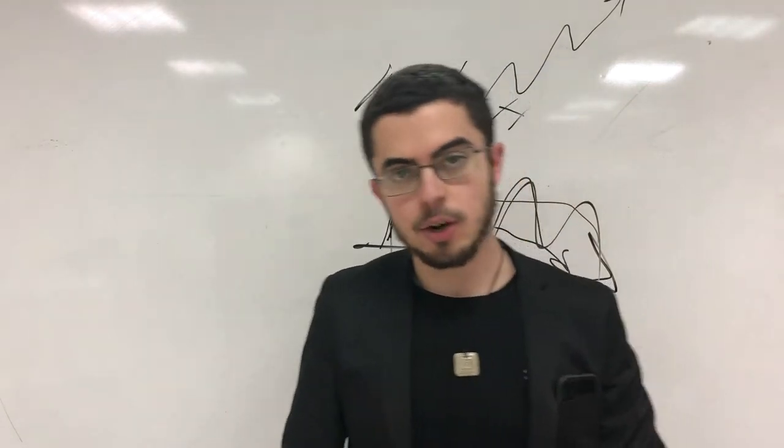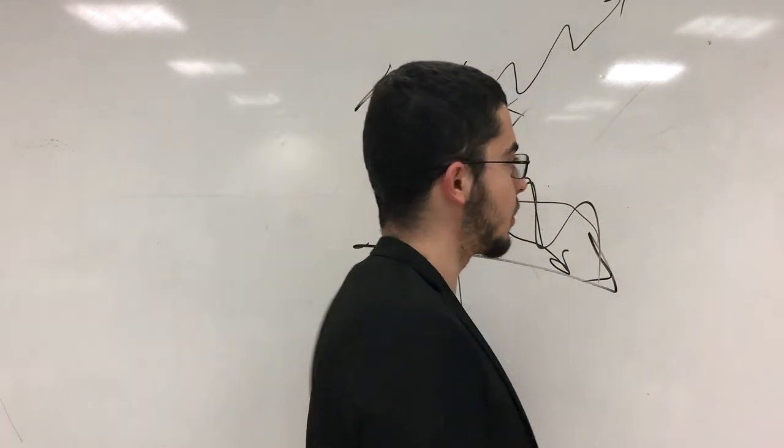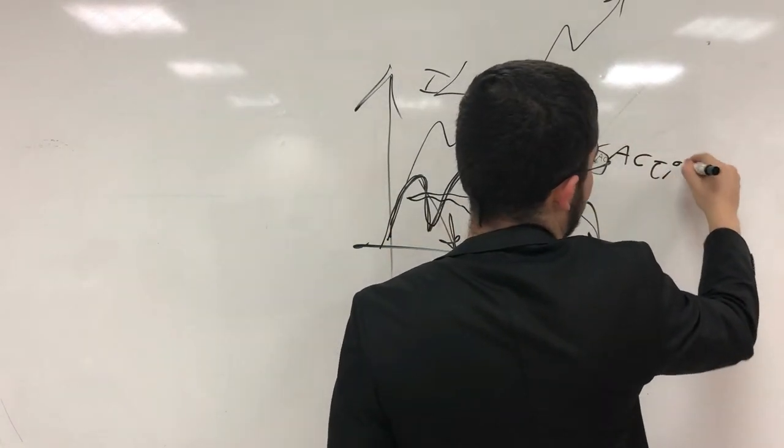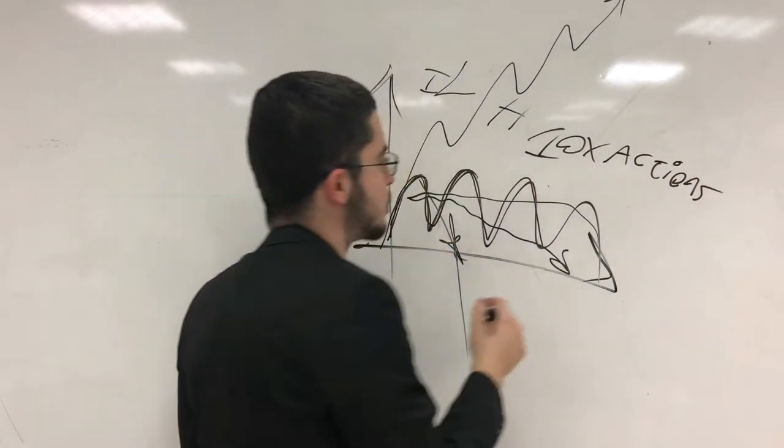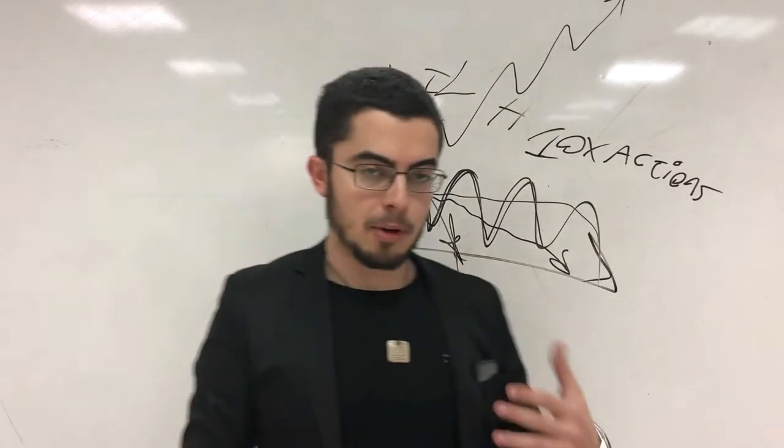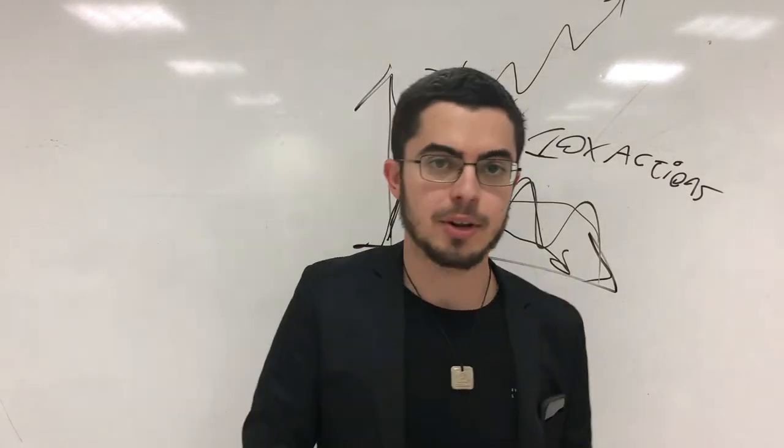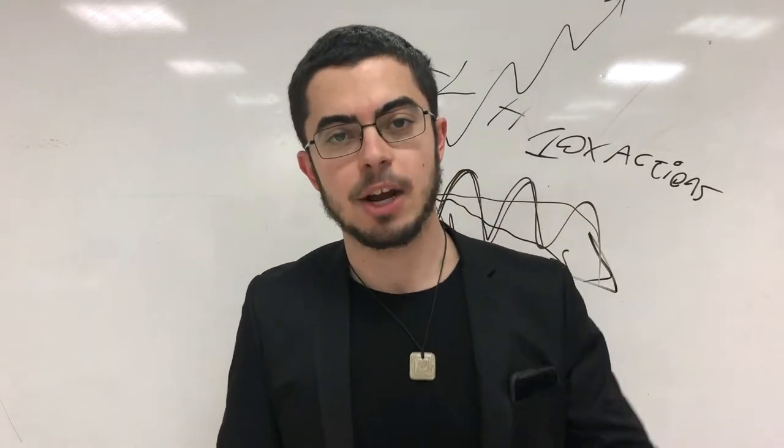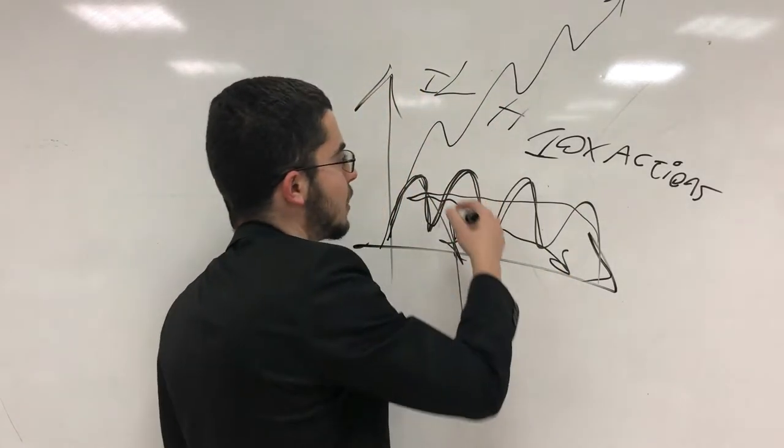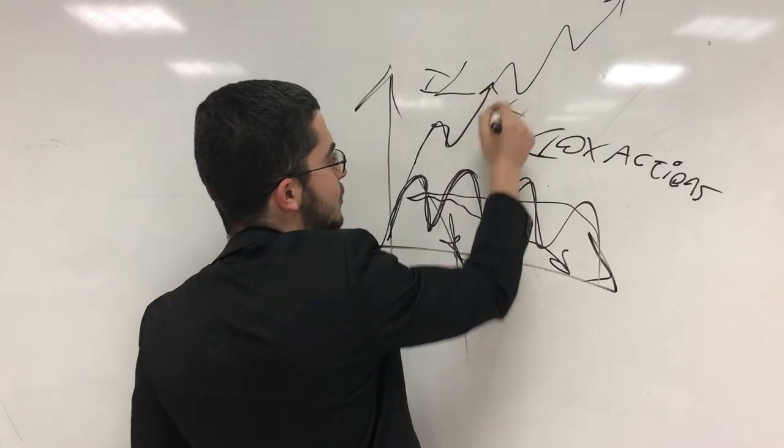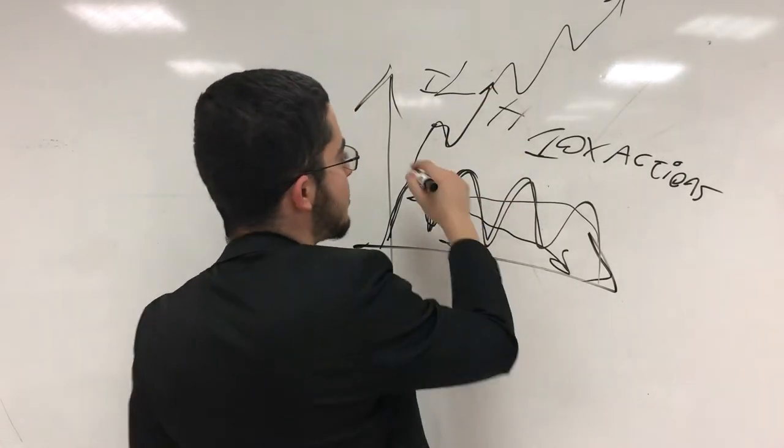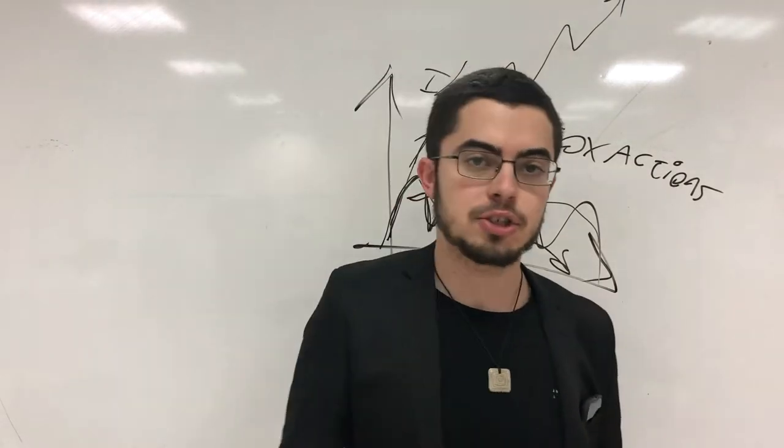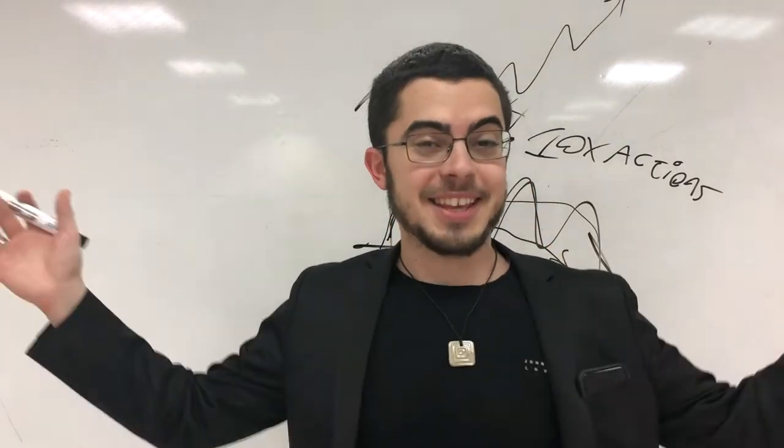So you want to start with the 10x rule. You always want to start with 10x actions. That is the basis for any form of growth. So what that means is start multiplying the amount of actions you're taking in your life to improve the different areas that you personally care about. So you want to have better health? Make sure you work out 10x more. You want to have a better income? Make sure you make 10x more phone calls, 10x more emails, more messages, more everything, basically.